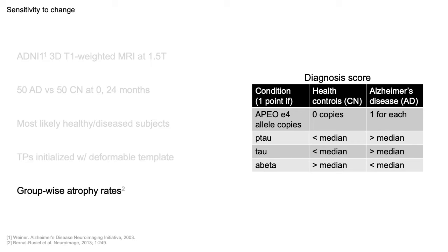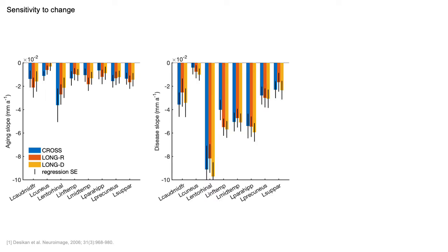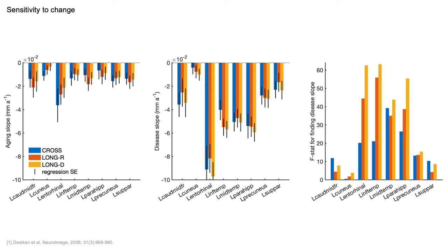For analysis, we fitted group-wise annual atrophy rates using a linear mixed effects model, controlling for sex and age, and using a random intercept for each subject. Shown here are the aging slopes across all subjects for different cortical structures in millimeters per year. Blue is cross-sectional processing, expected to be the noisiest. Orange is longitudinal processing with a rigid template, and yellow is longitudinal processing with a deformable template. The central plot shows disease slopes across Alzheimer's subjects only. In general, the stream with a deformable template tended to estimate lower aging slopes and higher disease slopes, which boosted statistical power for structures associated with Alzheimer's-related atrophy.